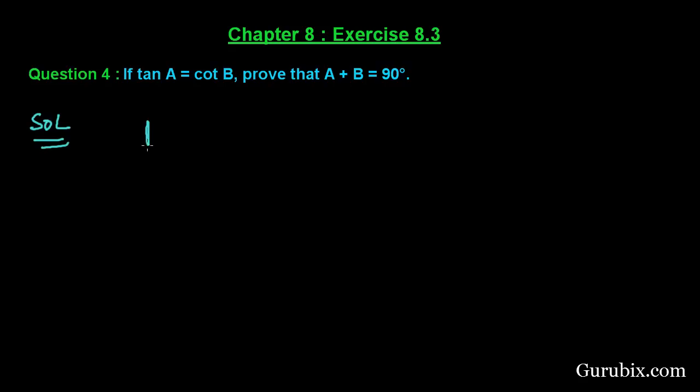We are given that tan A equals cot B. We can write this cot B like this: tan of 90 degrees minus B.